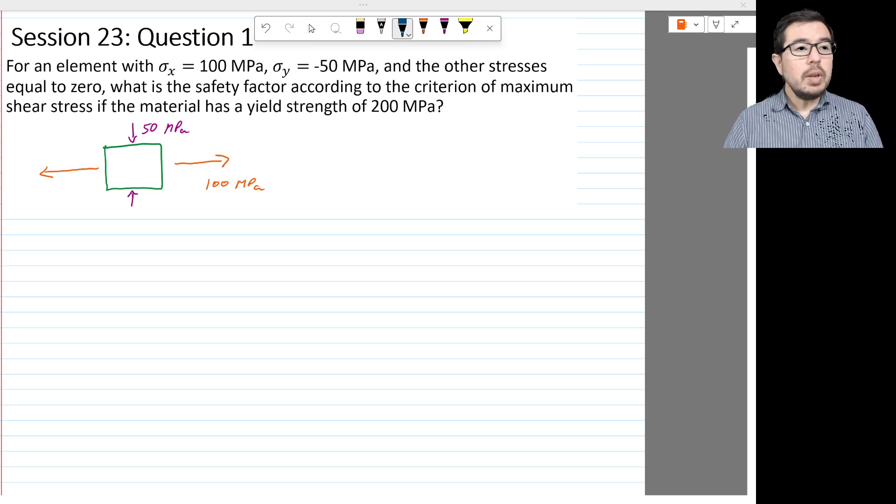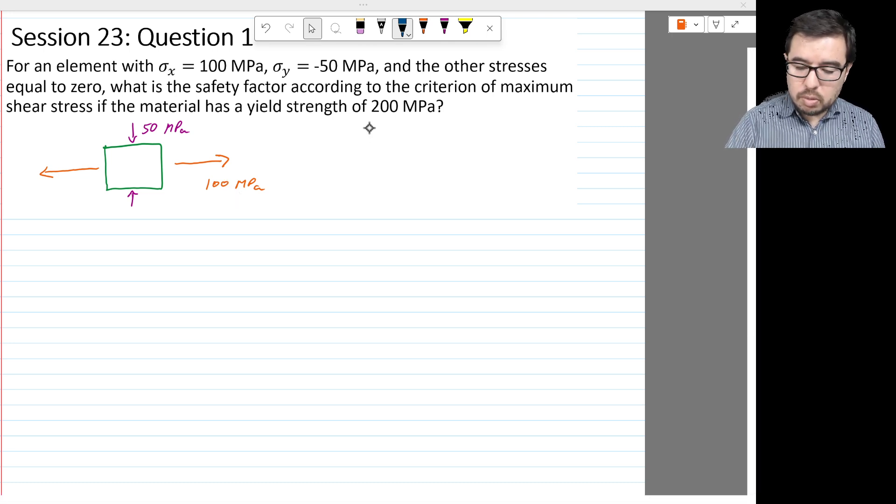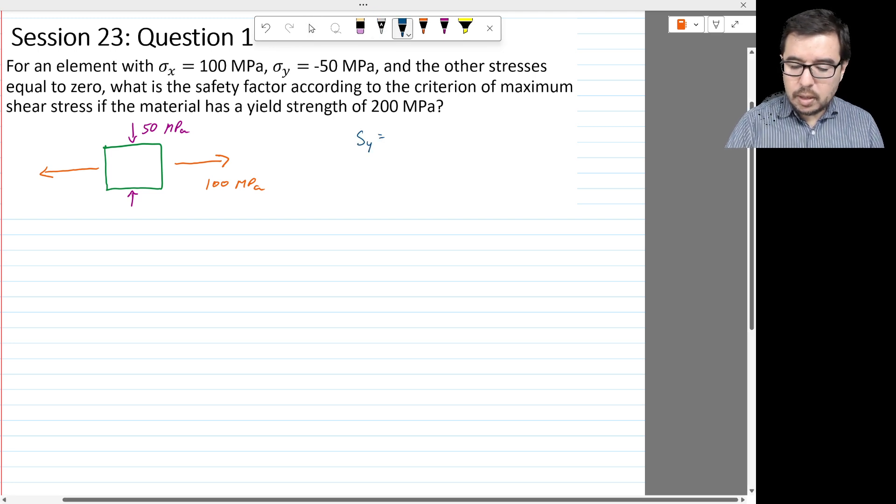So, the loading on the element is given by 50 MPa in compression on the top, and then 100 MPa in tension in the horizontal direction. And we're given that the yield strength is equal to 200 MPa.